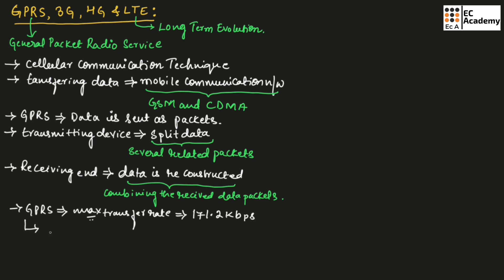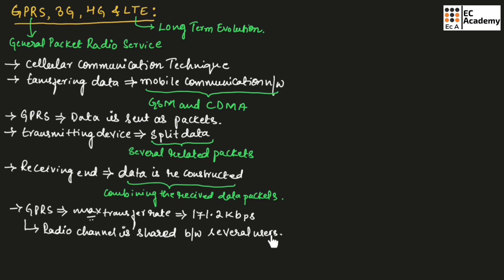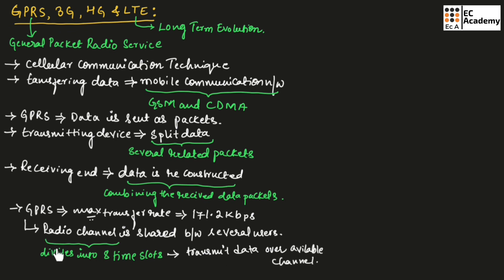In GPRS communication, the radio channel is concurrently shared between several users instead of a dedicated radio channel to a single user. GPRS communication divides the radio channel into 8 time slots and transmits data over the available channel on a particular time slot.